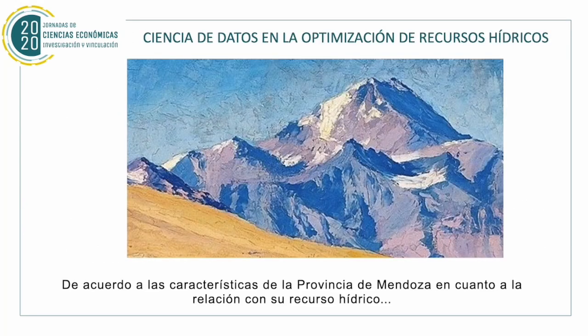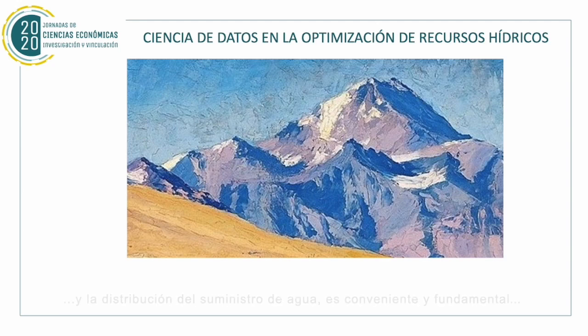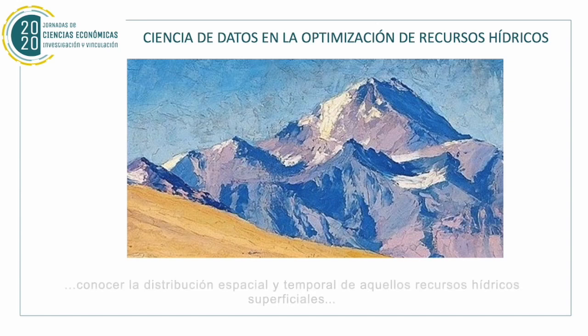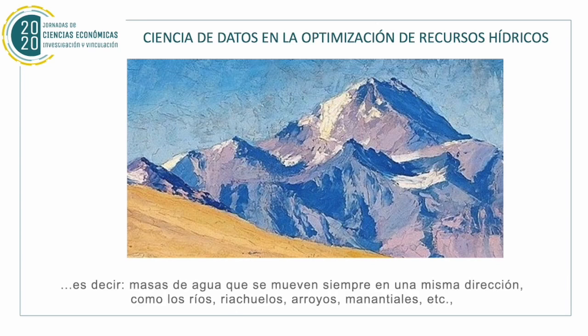Introduction. According to the characteristics of the Mendoza province in terms of its water resources and the distribution of water supplies, it is convenient and fundamental to know the spatial and temporal distribution of those superficial water resources — that is, masses of water that always move in the same direction, like rivers,